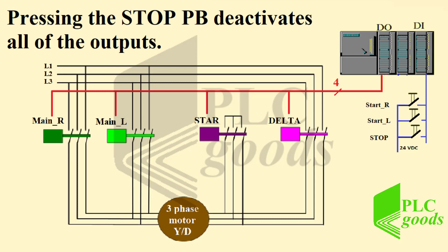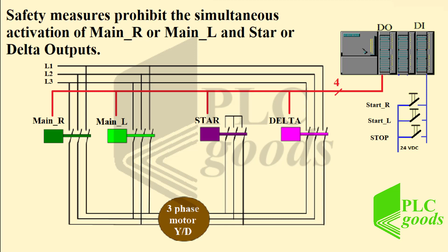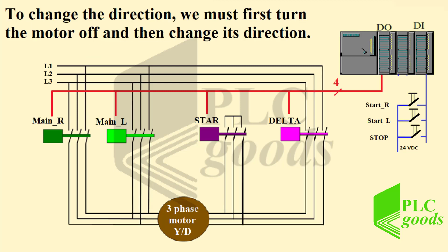On the other hand, pressing the stop push button deactivates all of the outputs. Safety measures prohibit the simultaneous activation of main right or main left and star or delta outputs. To change the direction, we must first turn the motor off and then change its direction.